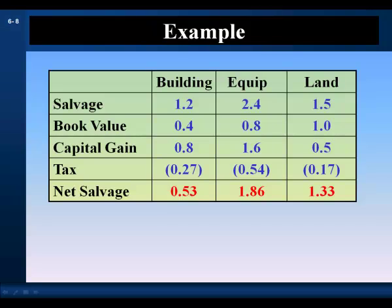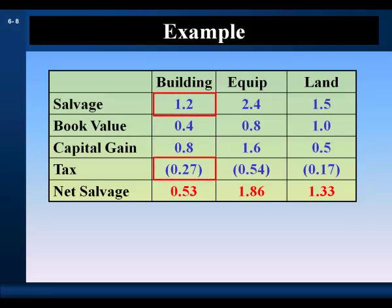For cash flow from capital requirements, let's calculate our net salvage. For the building, we expect to sell it for $1.2 million. It has a book value at the end of year six of $400,000, so for tax purposes we have an $800,000 capital gain. Applying our 34% tax rate to the $800,000 capital gain gives a capital gains tax of $270,000. Net salvage for the building is $1.2 million minus $270,000, which equals $530,000.